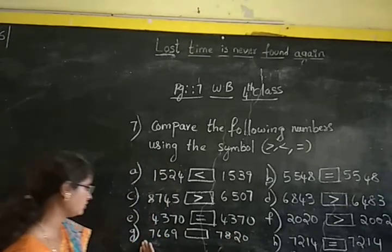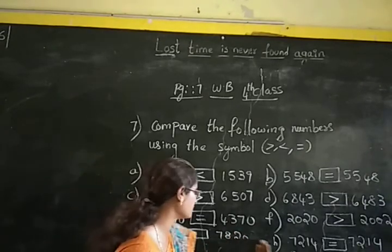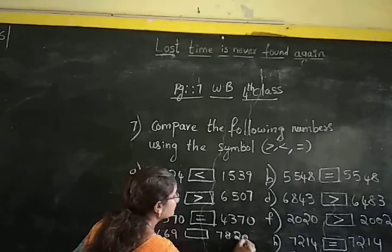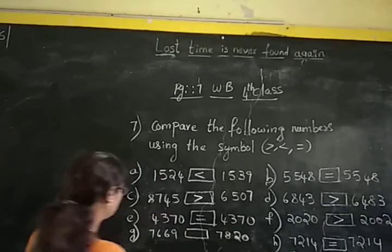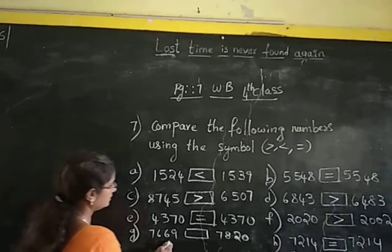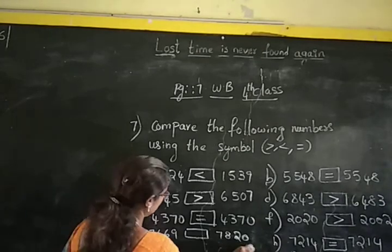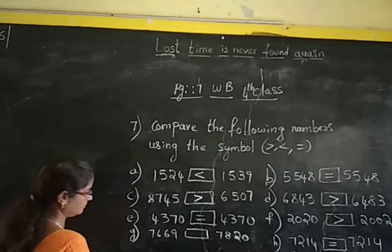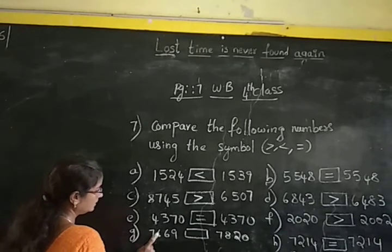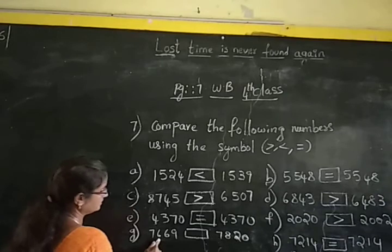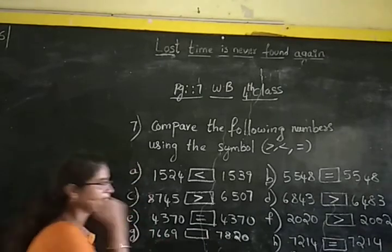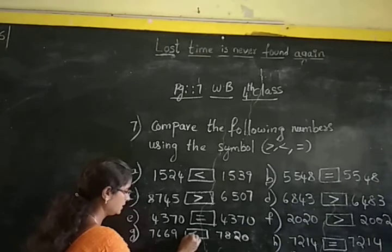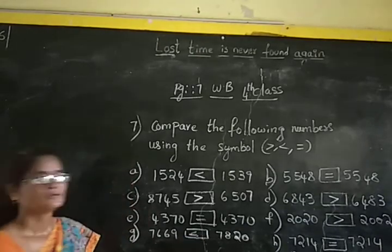I am redoing this sum because you can't see it clearly in the camera. 7,669 and 7,820: in thousands place both numbers have the same digits. In hundreds place, this number has 6 and this number has 8. Since 6 is smaller than 8, put the symbol lesser than.